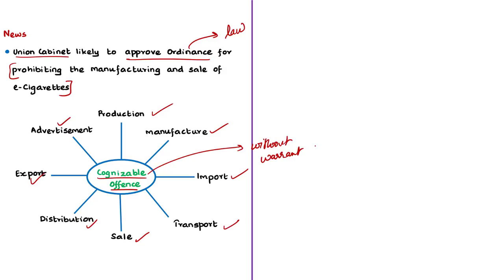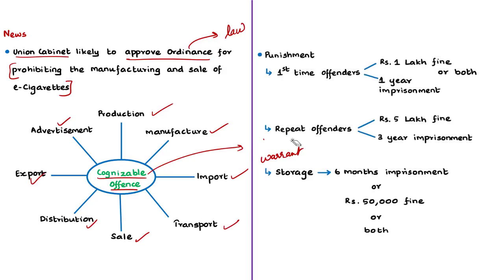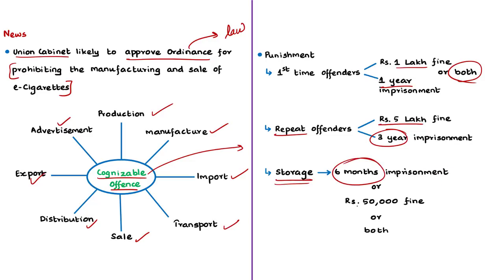As per the draft ordinance, these offenses will be punishable with imprisonment up to one year or a fine up to rupees one lakh or both for first-time offenders. For repeat offenders, the punishment is imprisonment up to three years and a fine up to rupees five lakh. Storage of e-cigarettes is also punishable with imprisonment up to six months or a fine up to fifty thousand rupees or both. This move is welcomed by anti-tobacco health experts, who have urged the government to pass the ordinance in the larger interest of public health.